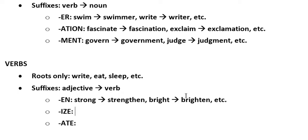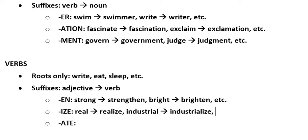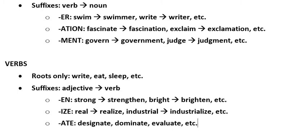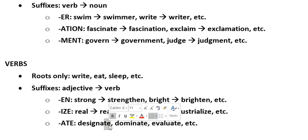-ize (I-Z-E) is one that again takes an adjective such as real, and we have the verb realize. Industrial and industrialize, and so on. -ate (A-T-E) gives us words such as designate, dominate, evaluate. We can see these are all verbs, but it's not always easy to see what the root is — for example, domin is not itself a word — but we can identify this little pattern: the A-T-E suffix.